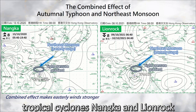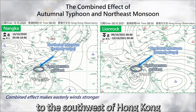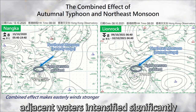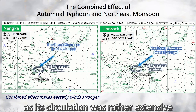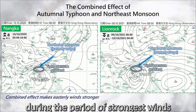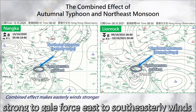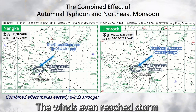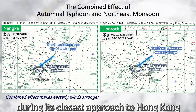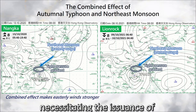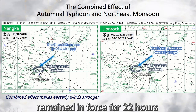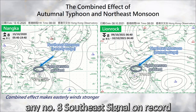As shown in the chart, tropical cyclones Nanka and Lion Rock were at some distance to the southwest of Hong Kong. However, under the combined effect with the northeast monsoon, the easterly winds over the Hong Kong-adjacent waters intensified significantly, particularly for tropical storm Lion Rock, as its circulation was rather extensive and it previously had the characteristics of a monsoon gyre. Combined with the easterly surge during the period of strongest winds, strong-to-gale force east-to-southeasterly winds prevailed over Hong Kong, and the winds even reached storm force in the southwestern part. Lion Rock skirted past at around 500 kilometers to the southwest of the territory during its closest approach, making it the furthest tropical cyclone necessitating the issuance of No. 8 gale or storm signal in Hong Kong since 1961. Lion Rock's No. 8 signal remained in force for 22 hours, which was the longest duration of any No. 8 southeast signal on record.